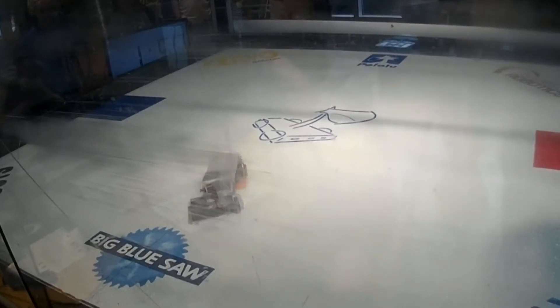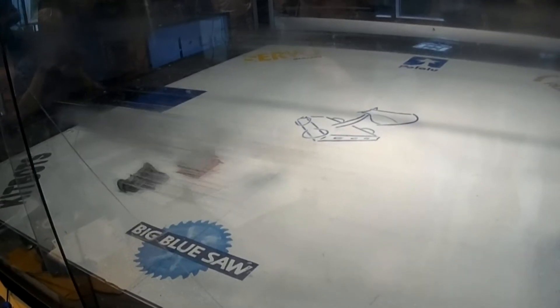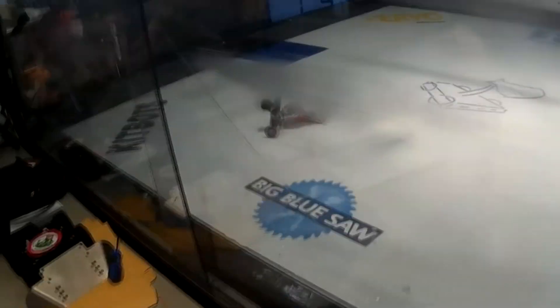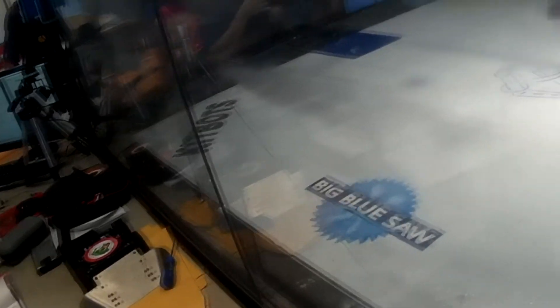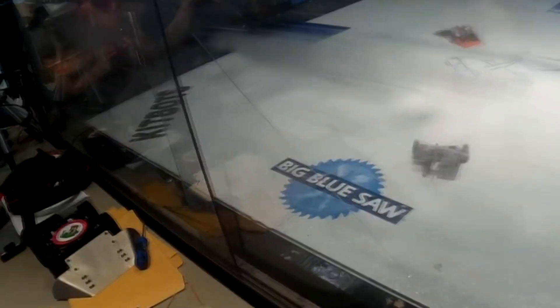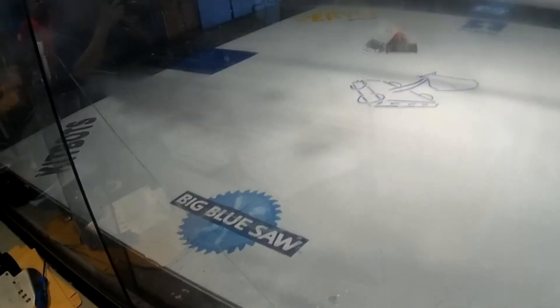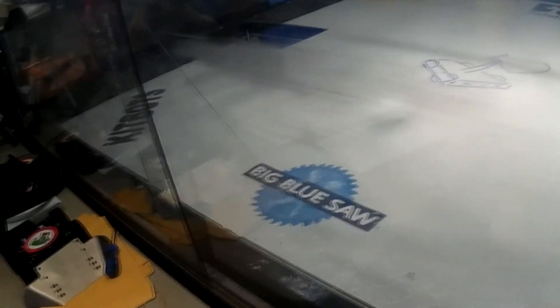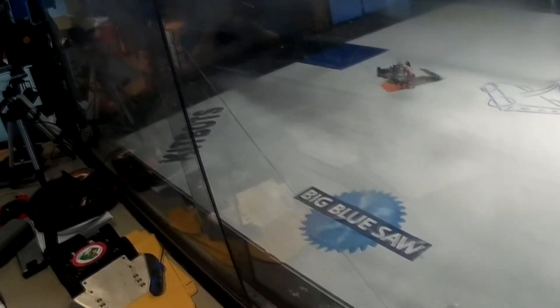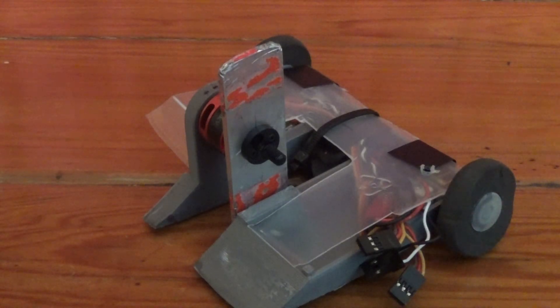My first and only fight was against a robot called Spicy Boy, a 150 gram wedge. I was doing decent - I couldn't get under his wedge, but I was able to get onto the sides and hit him and do damage. But at some point I got flipped upside down and the robot just stopped working.